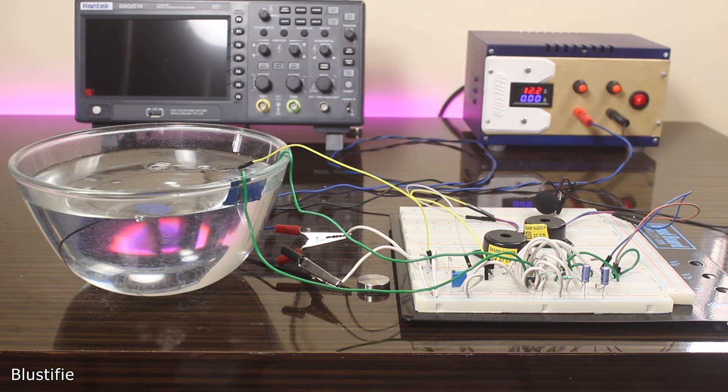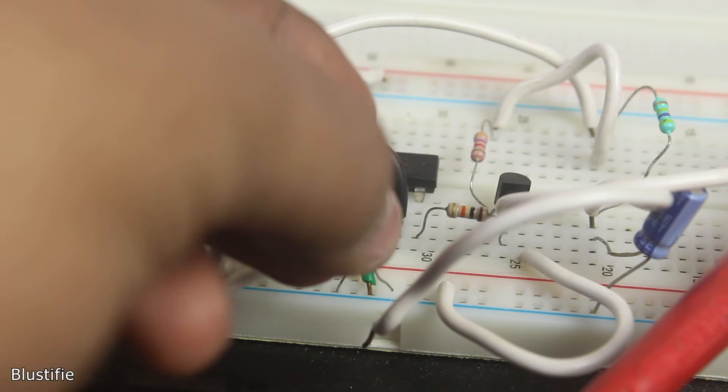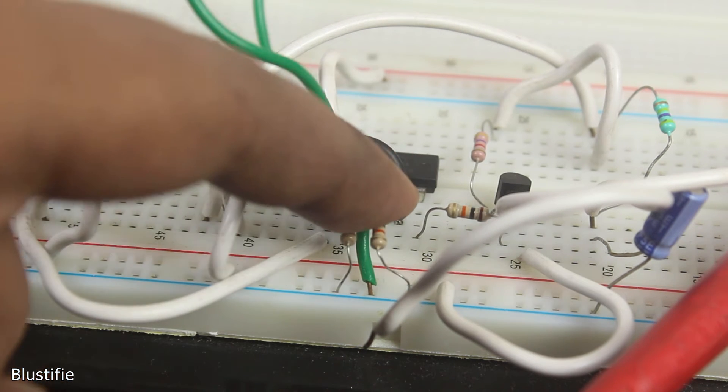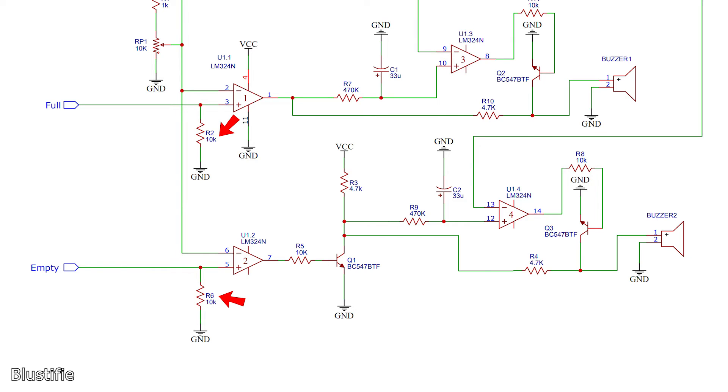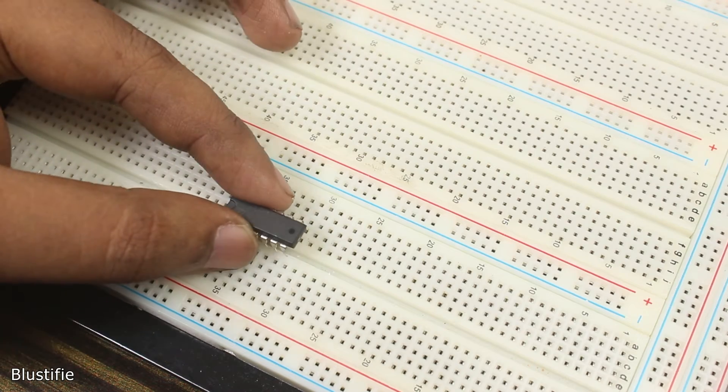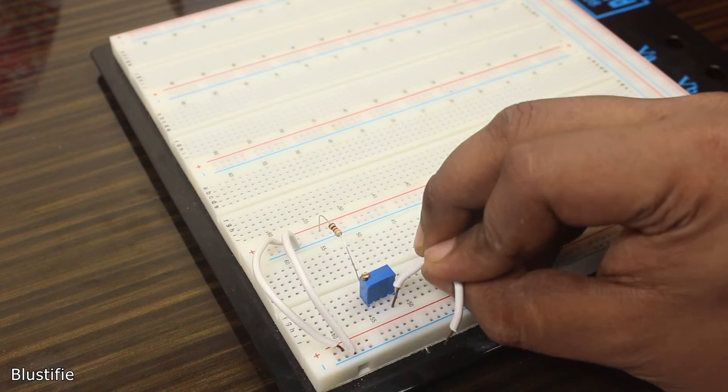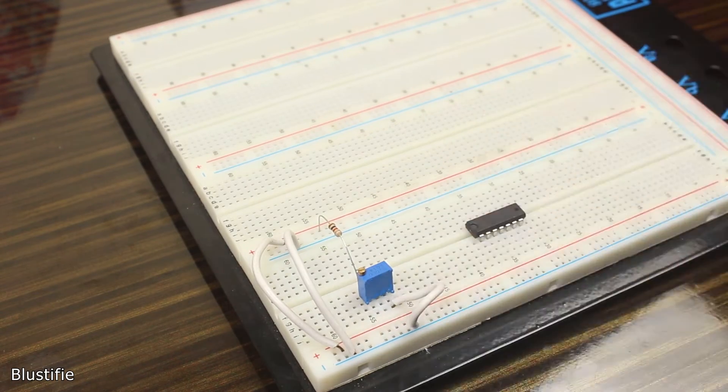That denotes the tank is full. Last but not least are these resistors, whose job is just to prevent the IC pins from floating. After building the circuit on the breadboard, to my own surprise, it works really great.